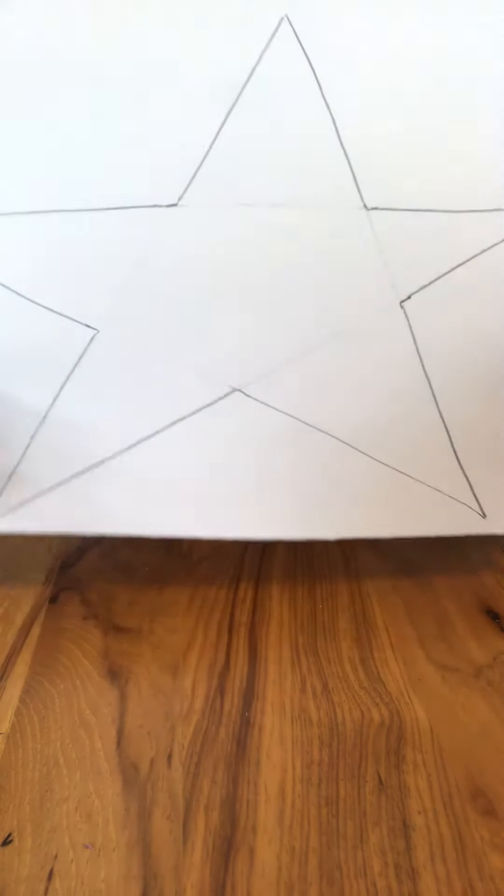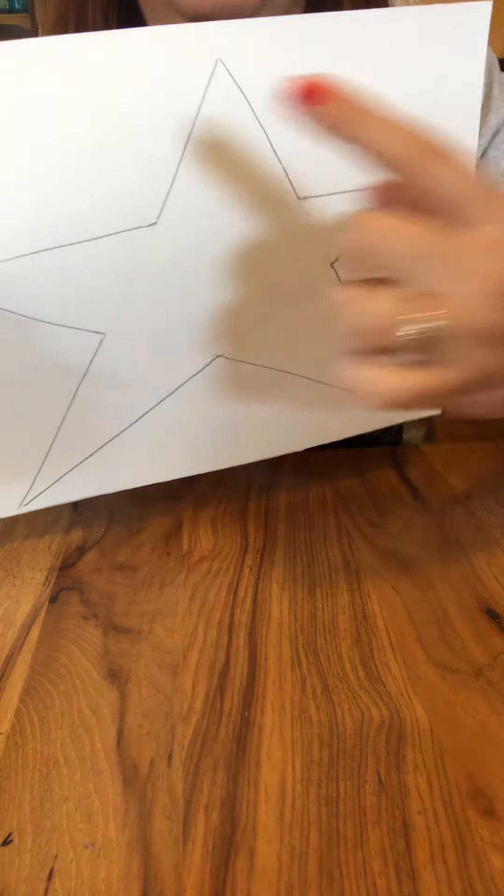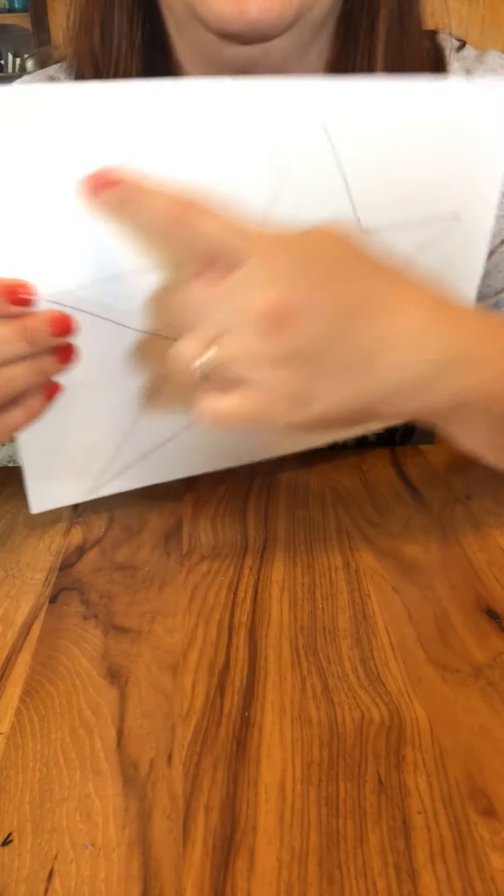Now you can add your stripes. So you can either add stripes going up and down or you can go side to side. Since mine is going to be patriotic I'm going to go from side to side like the stripes are usually on a flag.